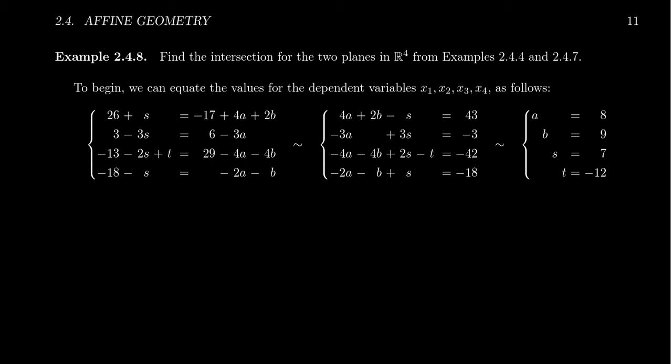So notice what happens if we move everything to the left-hand side. If you move the S to the other side, you're going to get a negative S. And then you add 17 to the other side. You get 26 plus 17, which is 43. You get this equation. Doing similar things for the other equations, you can move things around. You get negative 3A plus 3S equals negative 3. You're going to get negative 4A minus 4B plus 2S minus T equals negative 42. And then lastly, negative 2A minus B plus S equals negative 18. It's not too difficult to do so.